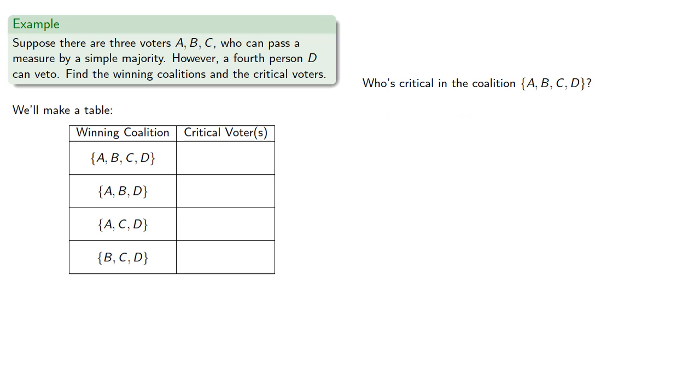So let's find our critical voters. Who's critical in the coalition A, B, C, and D? If D leaves, they veto the measure. The measure fails, so D is critical.